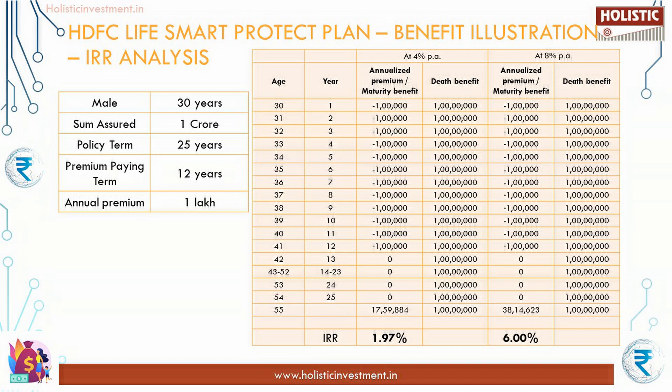HDFC Life Smart Protect invests in market-linked products. To estimate the potential return, let us analyze the benefit illustration from the HDFC portal. A 30-year-old male buys HDFC Smart Protect under Option A (Level Cover) with a sum assured of 1 crore and an annualized premium of 1 lakh. The premium paying term is 12 years and the policy term is 25 years. At the assumed rate of 8 percent, the fund value at the end of 25 years is ₹38.14 lakhs, and at 4 percent it is ₹17.59 lakhs. The IRR for the 8 percent scenario is 6 percent, and for the 4 percent scenario it is 1.97 percent.